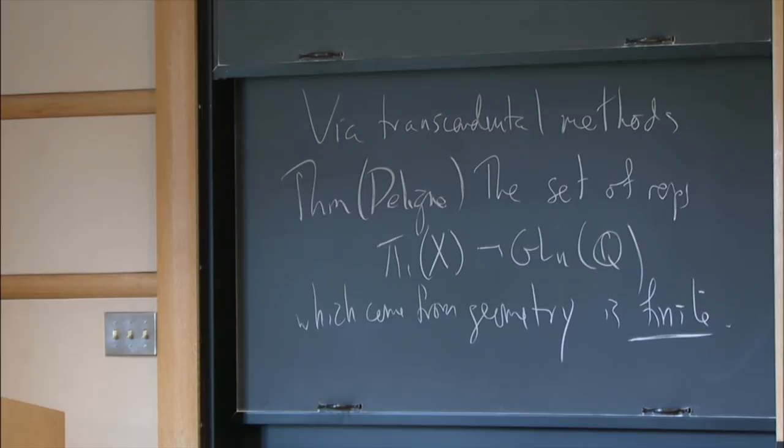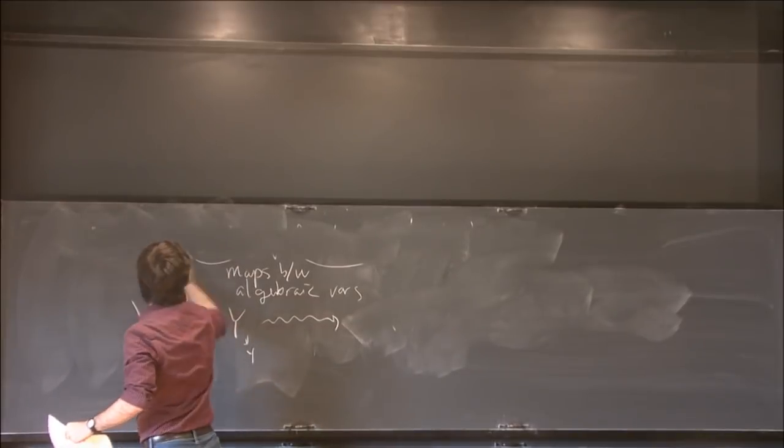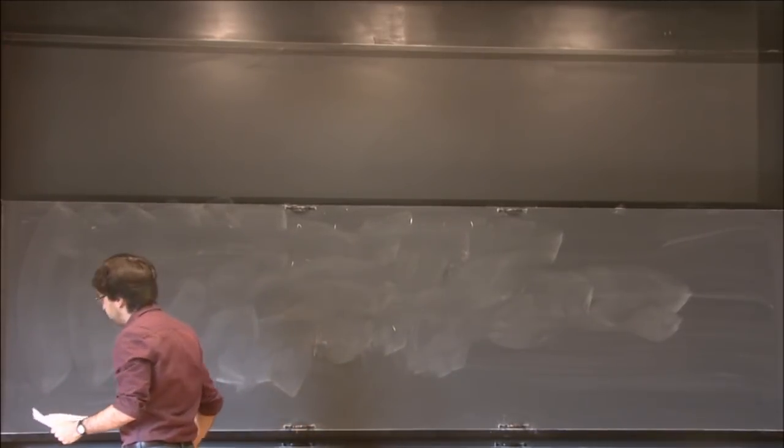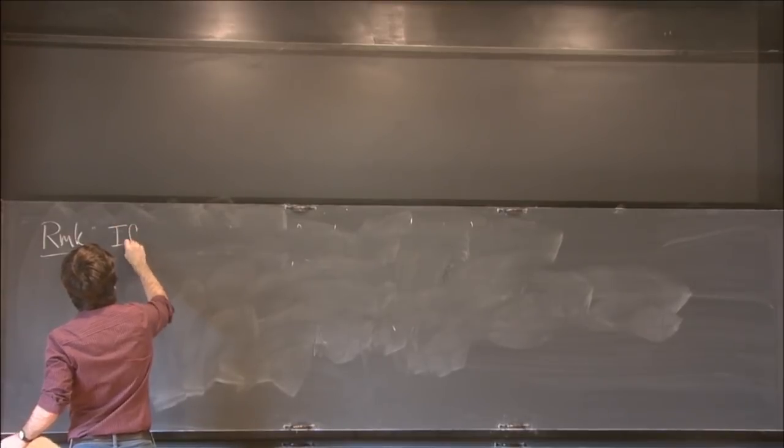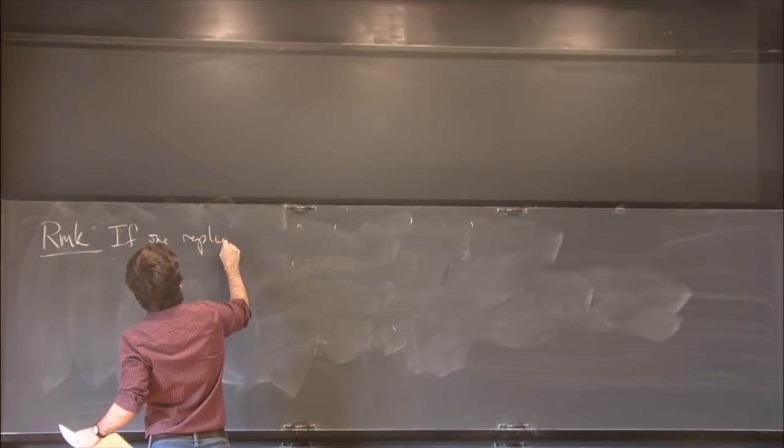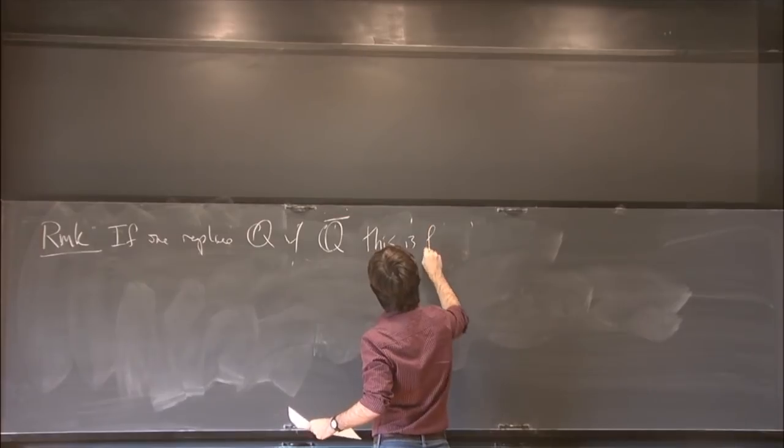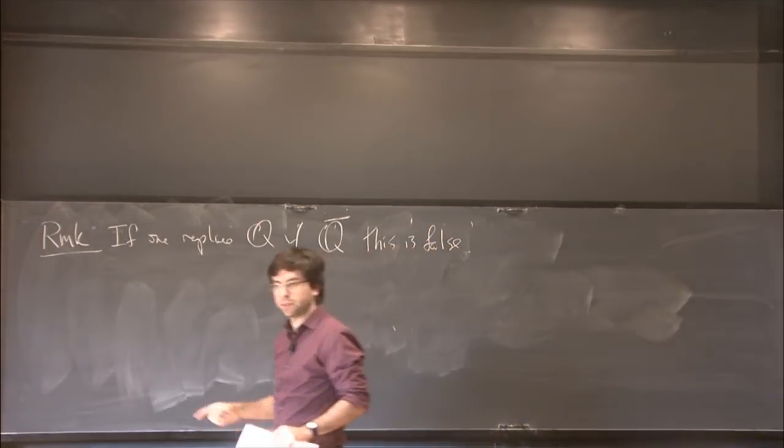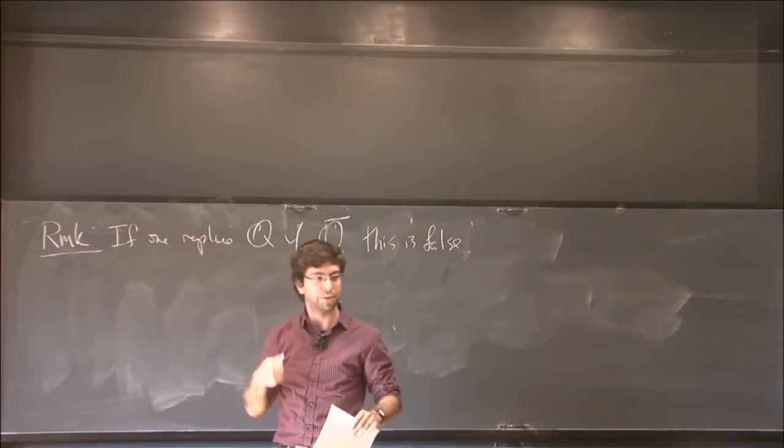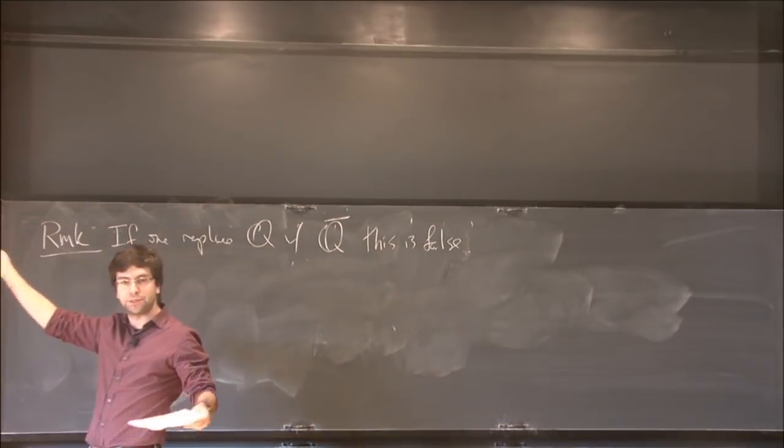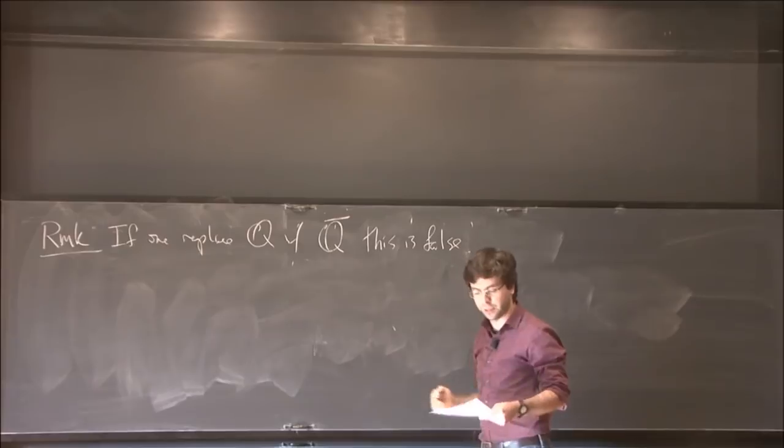Let me just remark that something kind of subtle is happening here. We have finitely many representations like this. The sort of strange remark is that if you replace Q with Q-bar, this is false. And it's because come from geometry had this kind of subquotient definition. To come from geometry just means you show up inside of some representation. So for example, if you took x to be C-star, the simplest Riemann surface with non-trivial fundamental group, any finite order character shows up this way. There are infinitely many finite order characters with values in Q-bar.